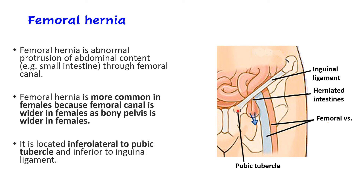The position of femoral hernia is inferolateral to the pubic tubercle. This distinguishes it from inguinal hernia, which lies above and medial to the pubic tubercle, as the inguinal canal lies above the medial part of the inguinal ligament. Remember: inguinal hernia is superomedial to the pubic tubercle; femoral hernia is inferolateral to the pubic tubercle.